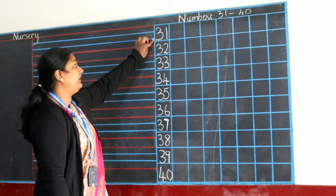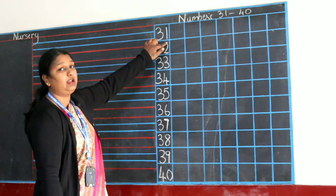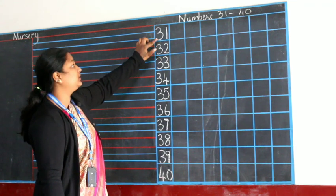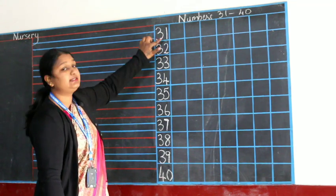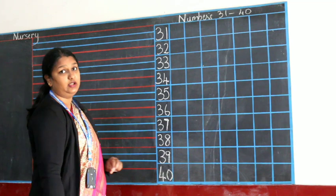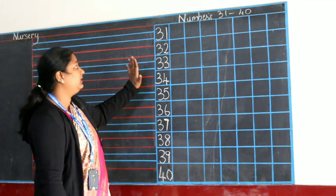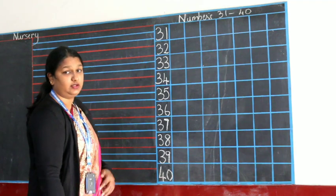So, when you are writing, you will have to say the number and write. Like 3, 1, 31. So, you write 3, 1 and say 31. Write this in your square line notebook, numbers from 1 to 40. Thank you.